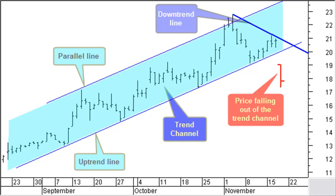In this chart of CRM, you can see an uptrend line with a parallel line to form a medium-term trend channel. The last day on the chart, price falls out of the channel. What you can do now is start drawing a new downtrend line.